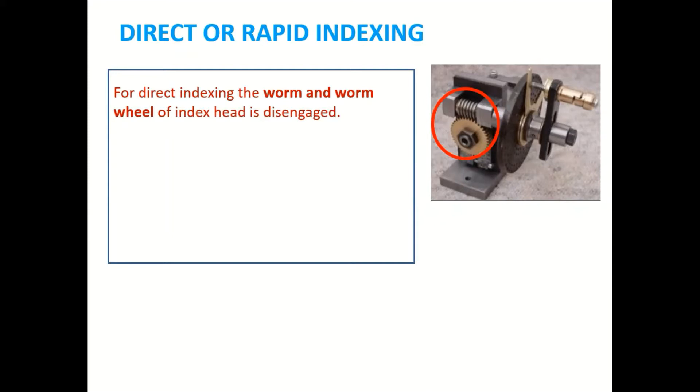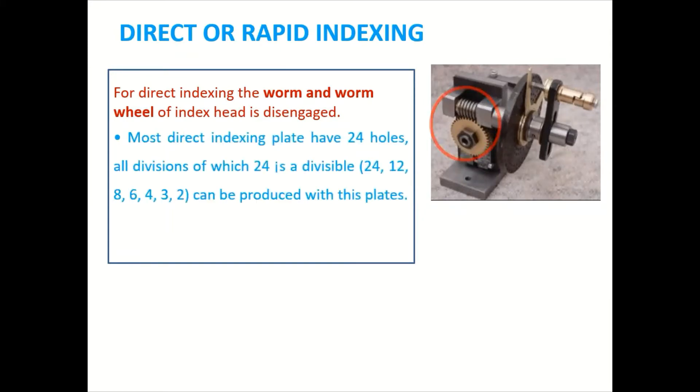then the pin is engaged directly after the work and index plate are rotated. So rapid indexing we are using an index plate having 24 holes and this which will be divisible by 24, 12, 8, 6, 4, 3, 2.